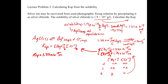To calculate the Ksp, we plug in 1.33 times 10 to the minus 5 molar times 1.33 times 10 to the minus 5 molar, and multiply those together. We get a Ksp equal to 1.77 times 10 to the minus 10. Remember that all K values don't have units, so the Ksp is just 1.77 times 10 to the minus 10, just like we saw with Ka for acids and bases.